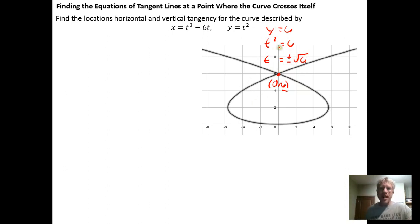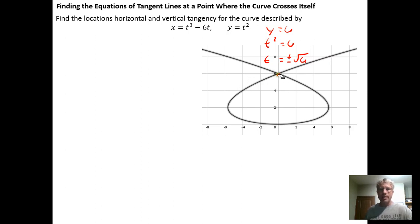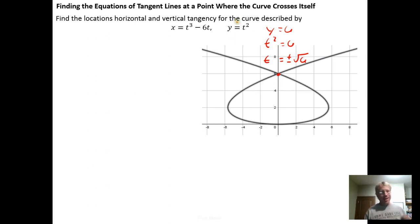However, if we didn't have a lattice point, things would be more difficult. We would need to find the value of t that gives a point where the curve crosses itself. The idea is that when the curve crosses, the x and y coordinates are exactly the same. If you don't have a lattice point where it's visually obvious, there isn't a set technique — it's really about being flexible in your thinking and being a critical thinker.